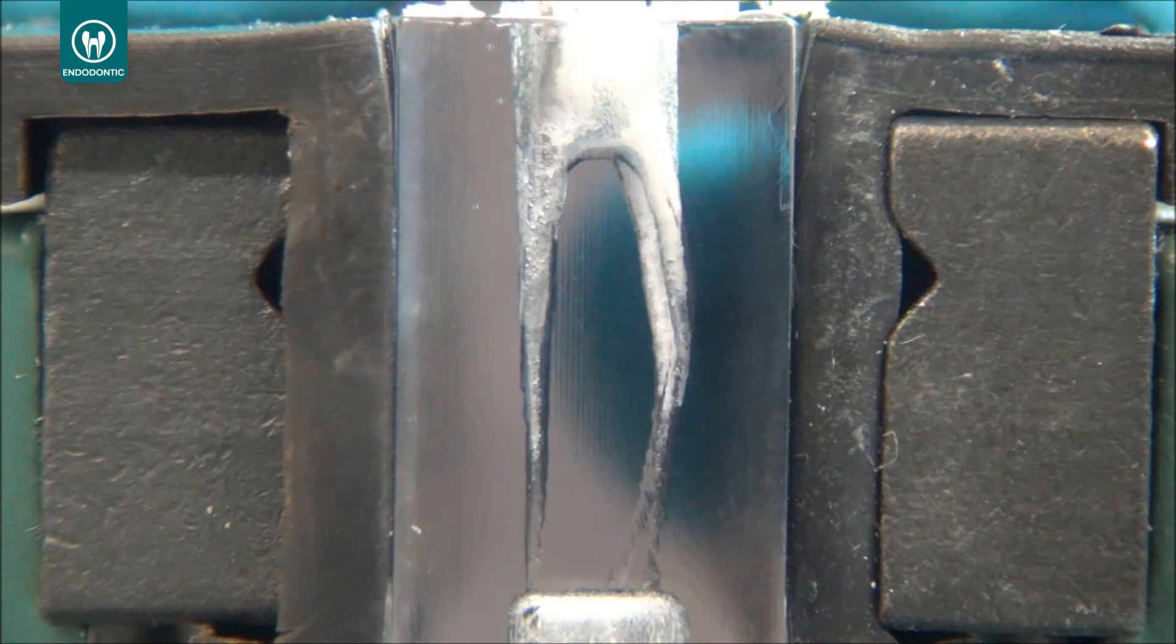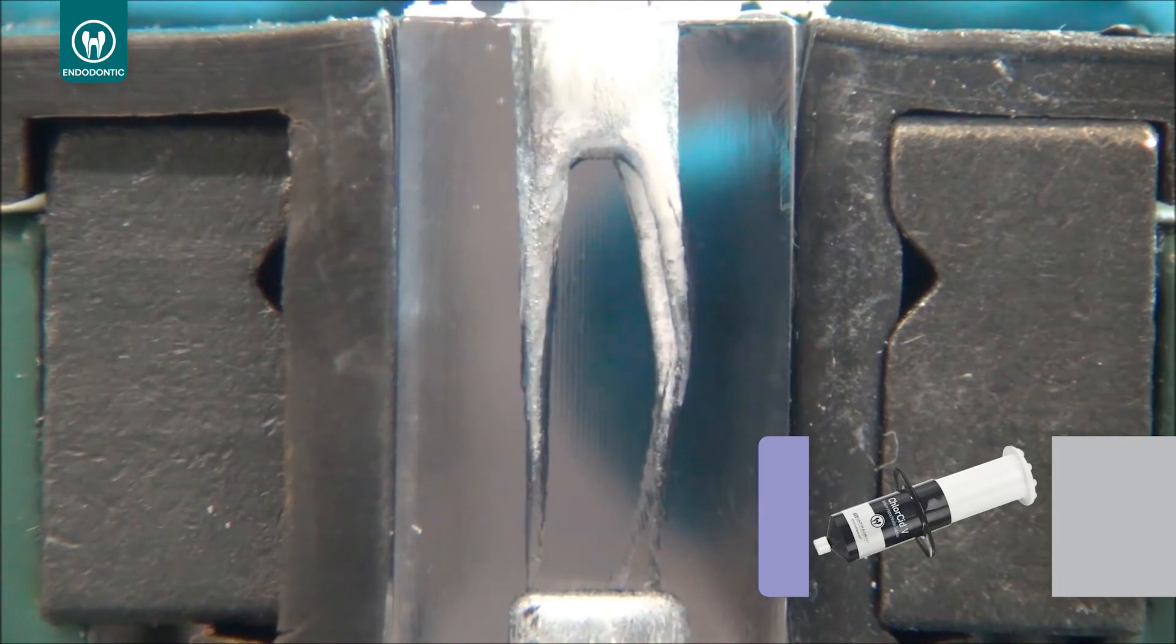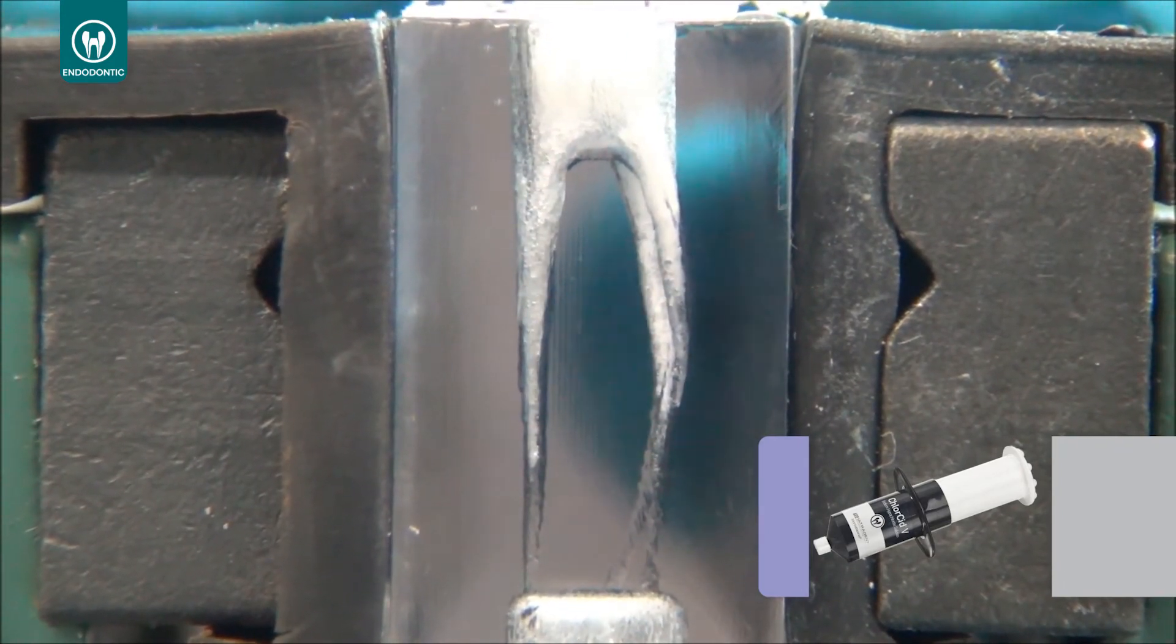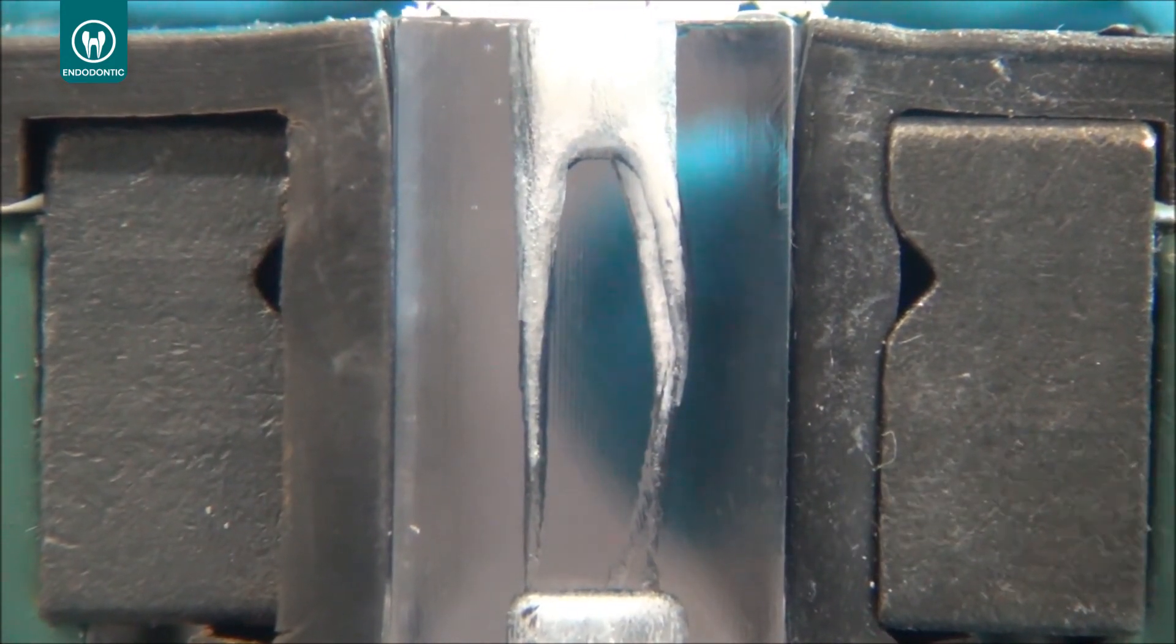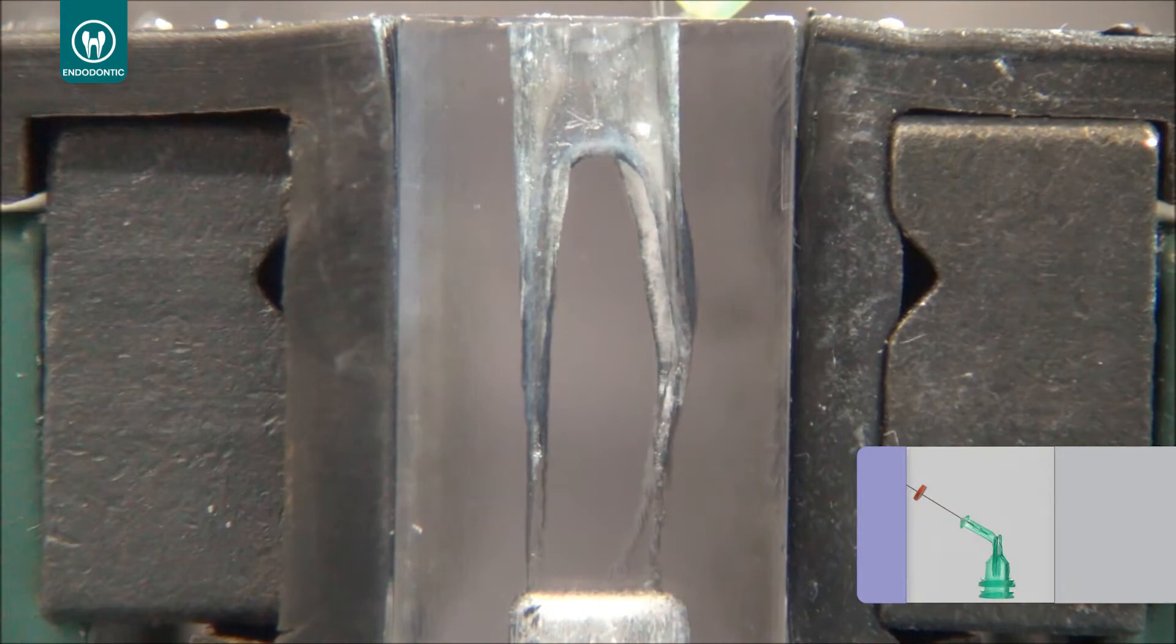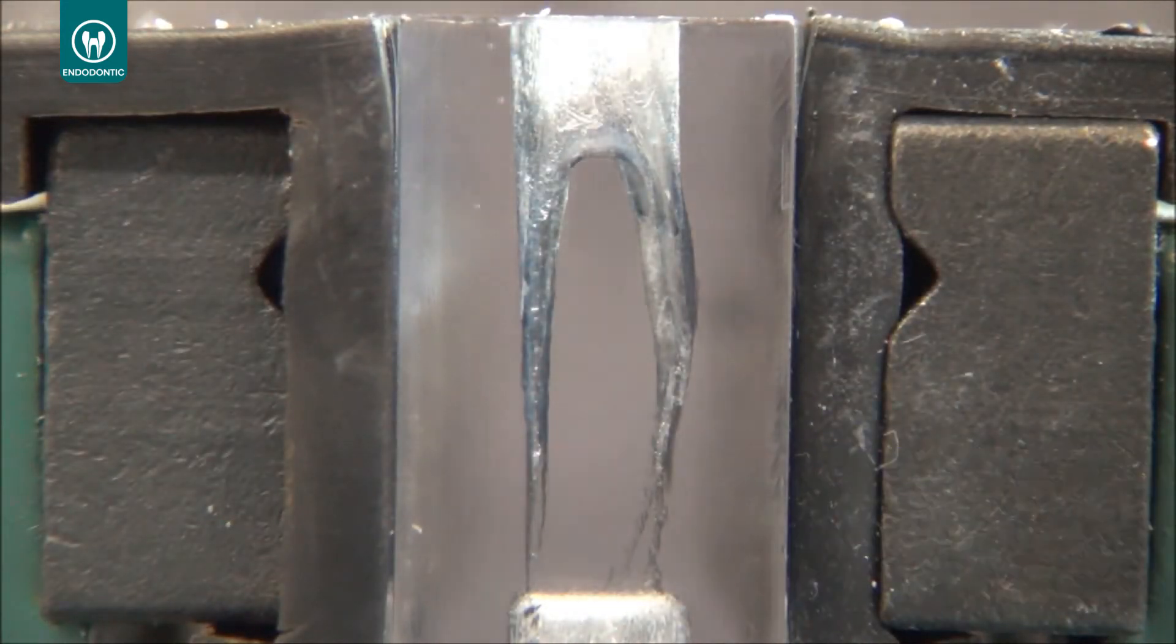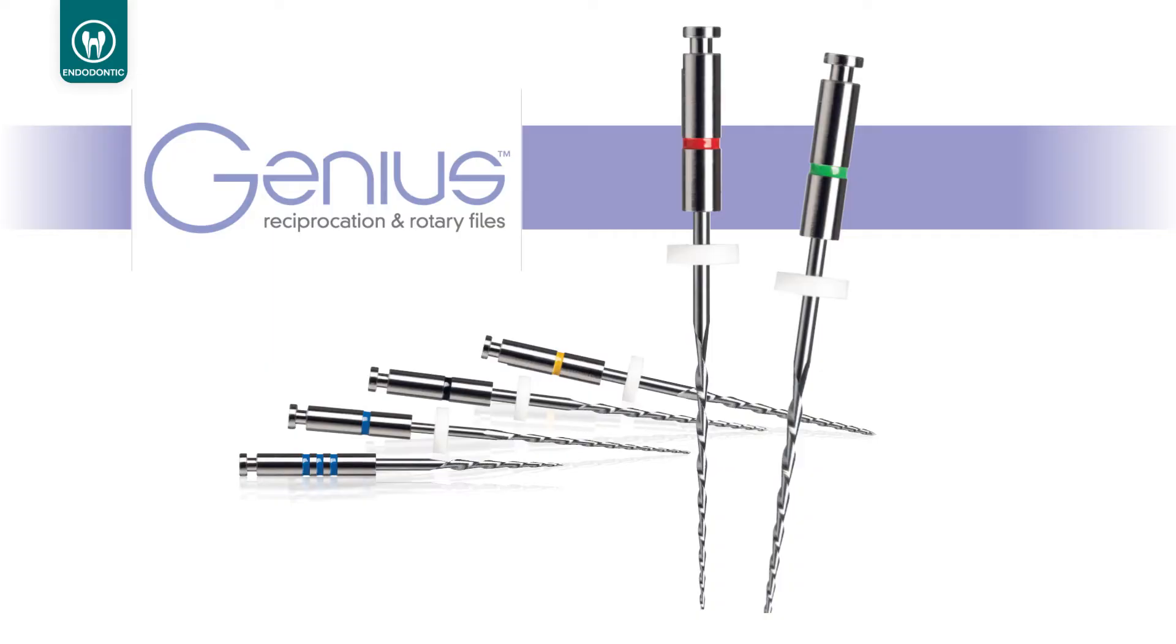Just remember to fill the canal with a lot of irrigant. I prefer to use the Chlor-XTRA, that is a sodium hypochlorite in a viscous presentation. After using, you do the irrigation with a NaviTip. I recommend the 31 gauge double side port, and remove all debris from inside the canal.